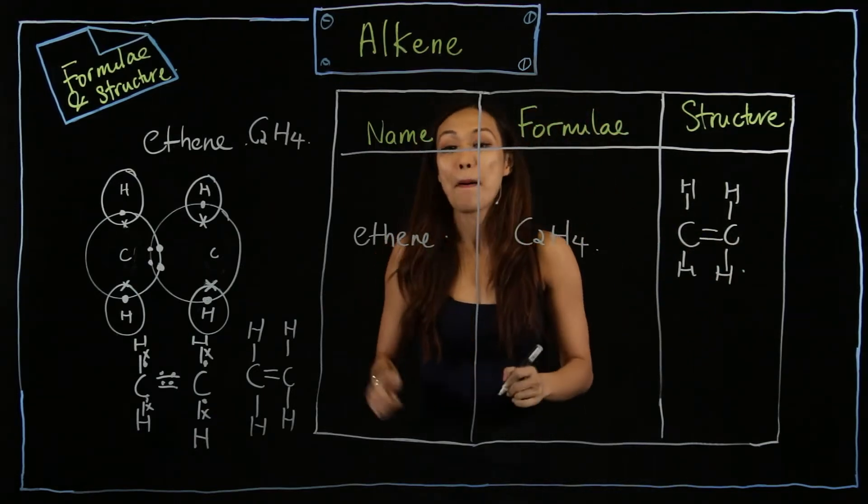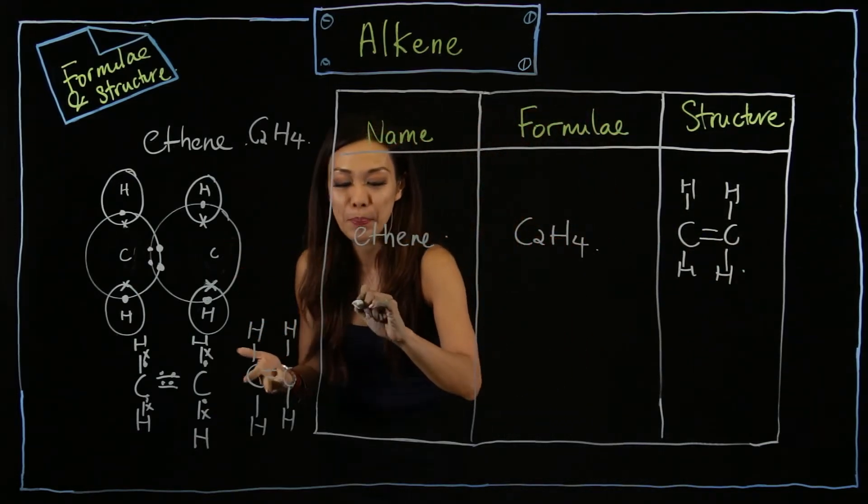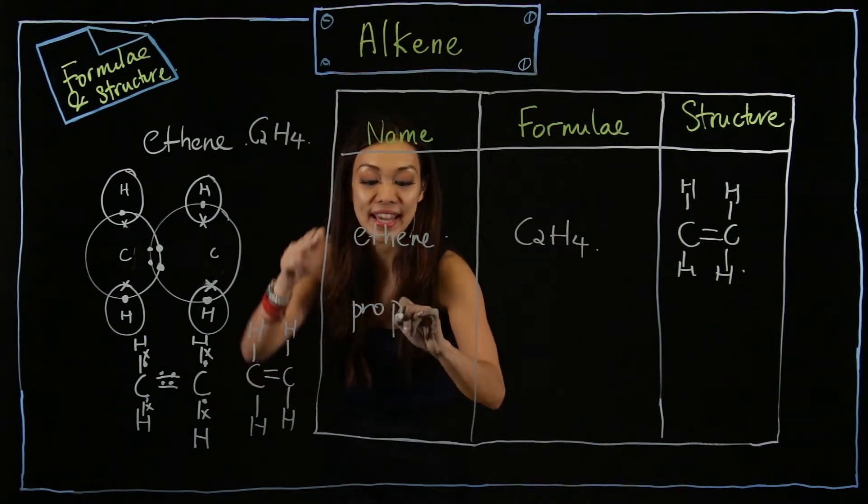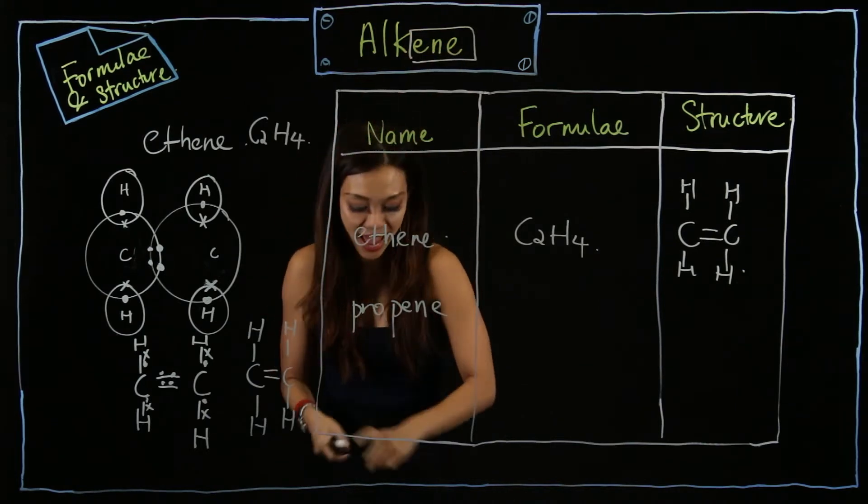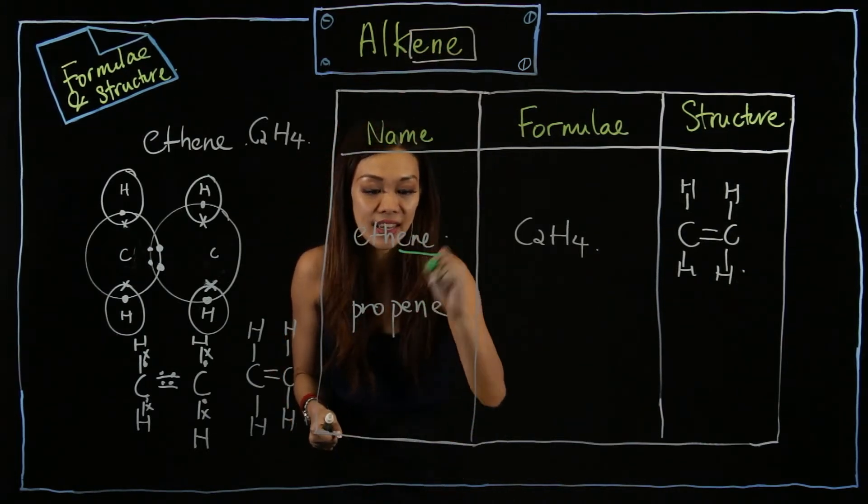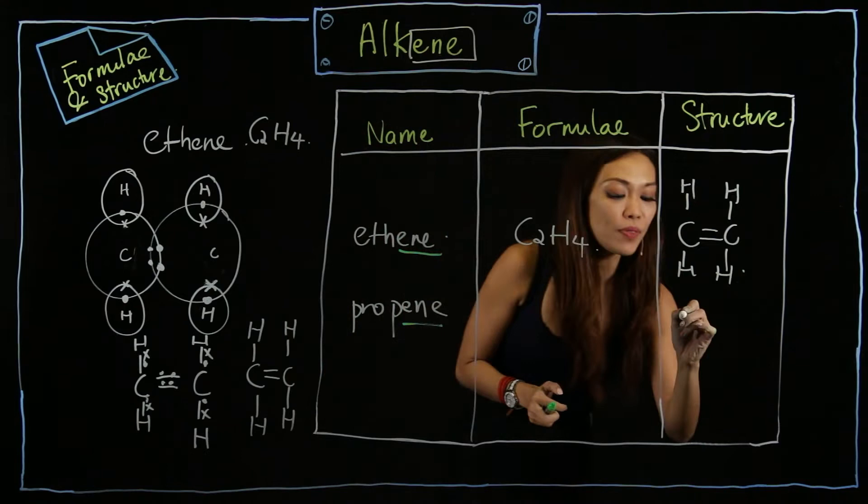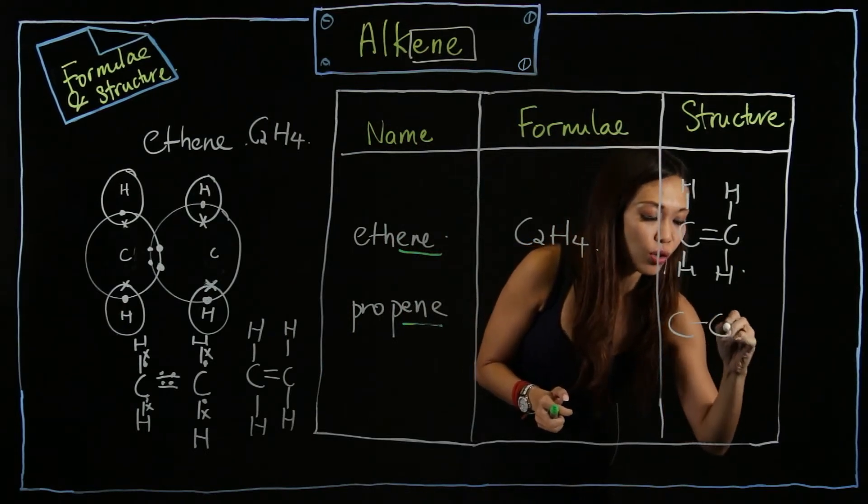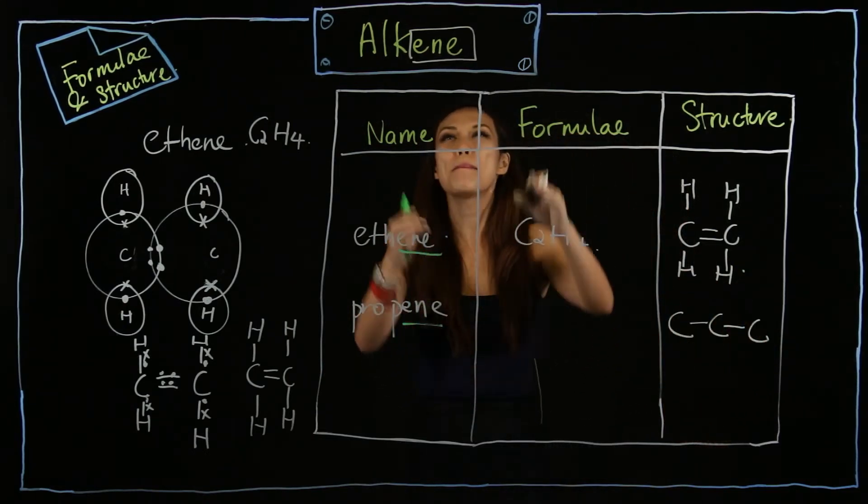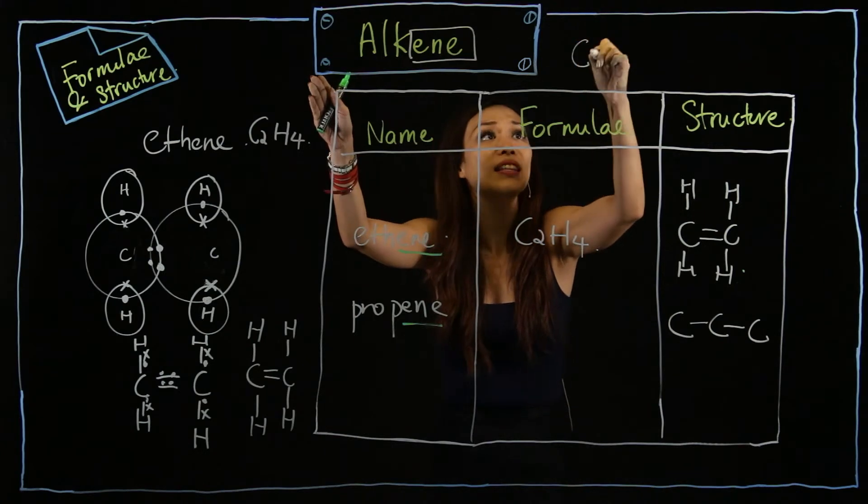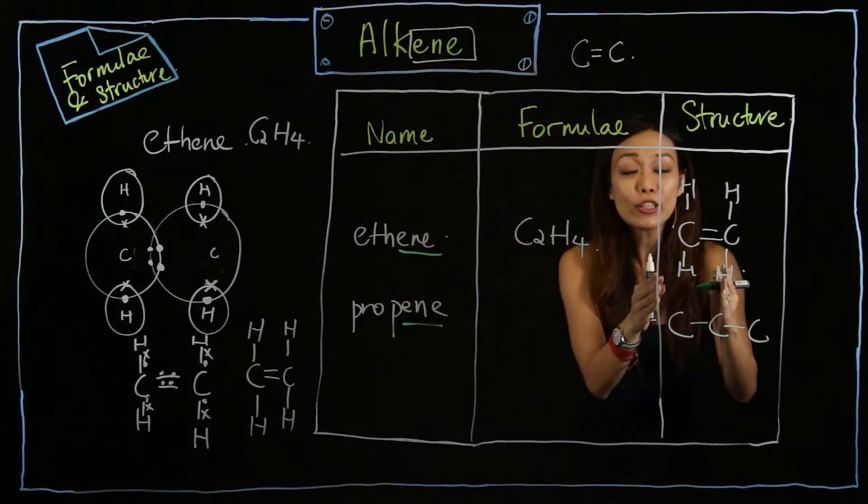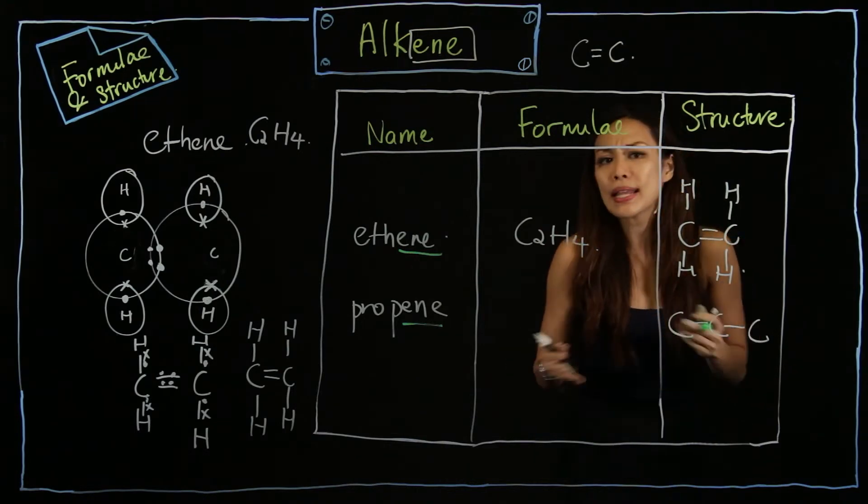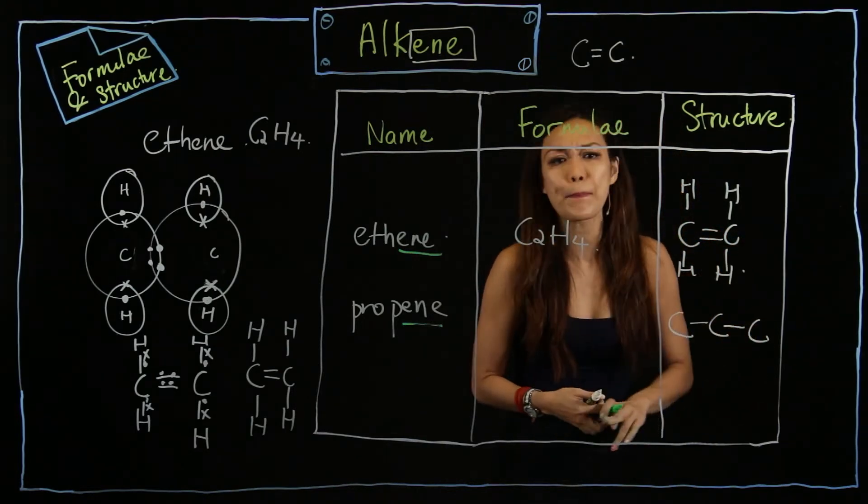Next we have propene, P-R-O-P-E-N-E, ending in E-N-E. Same thing - one, two, three carbons. But what makes alkene so special is that double carbon bond, C=C double bond. So I need to insert the double bond here.